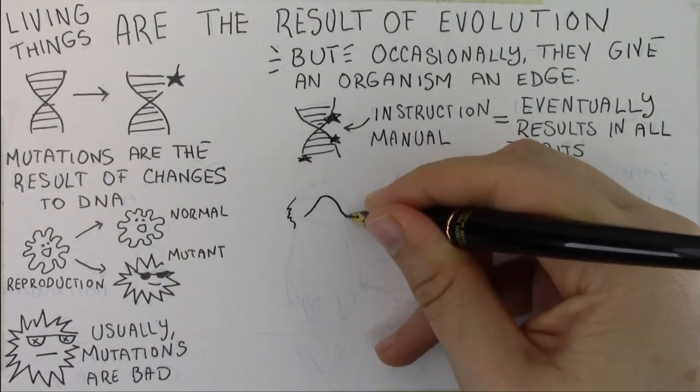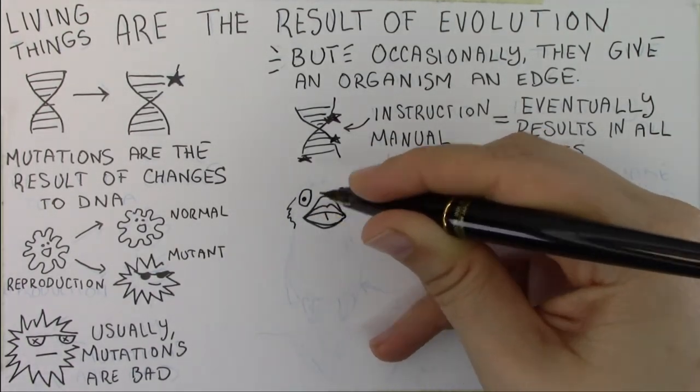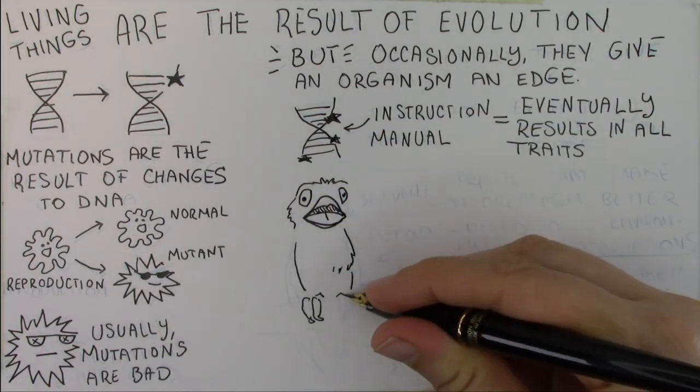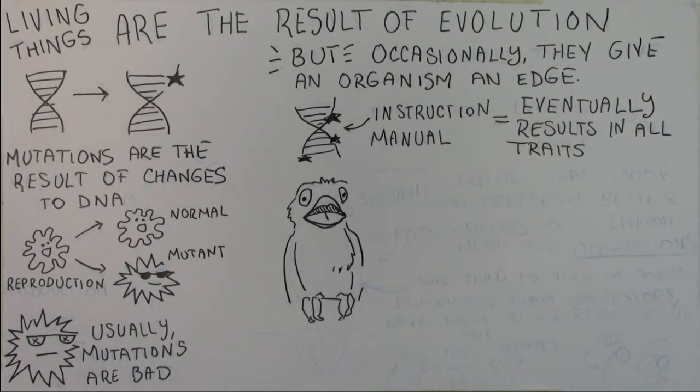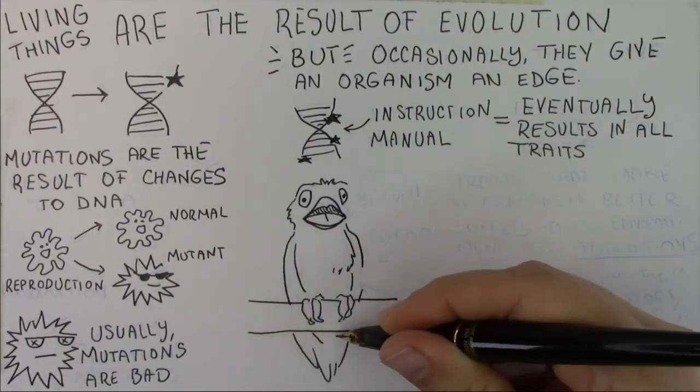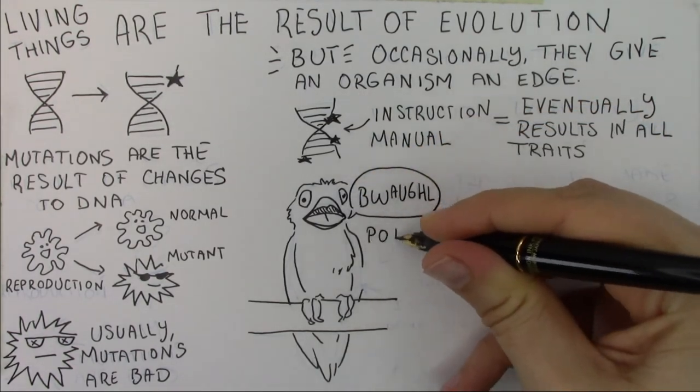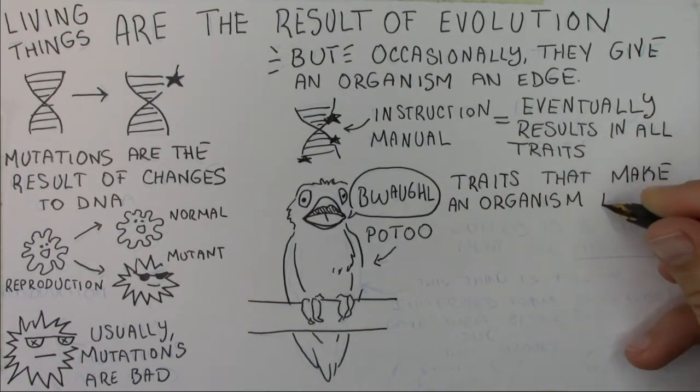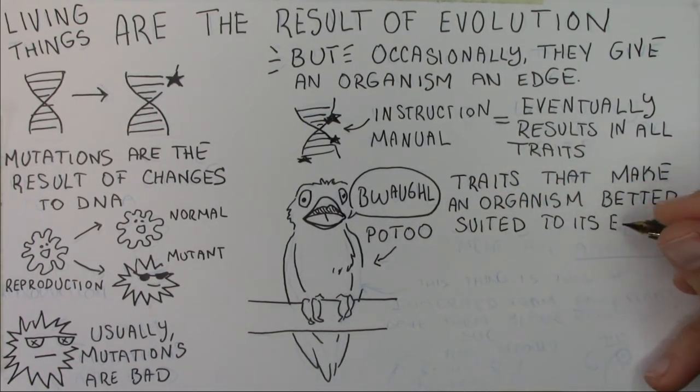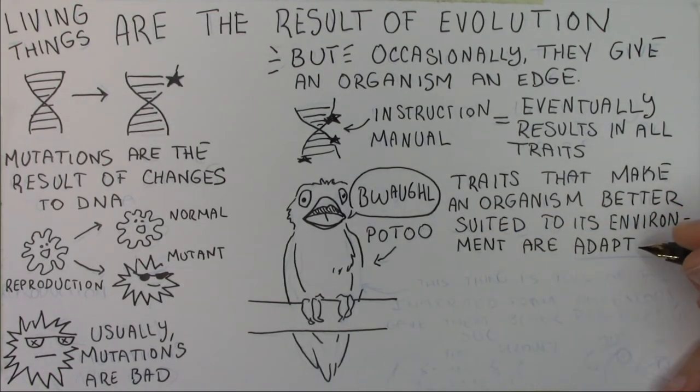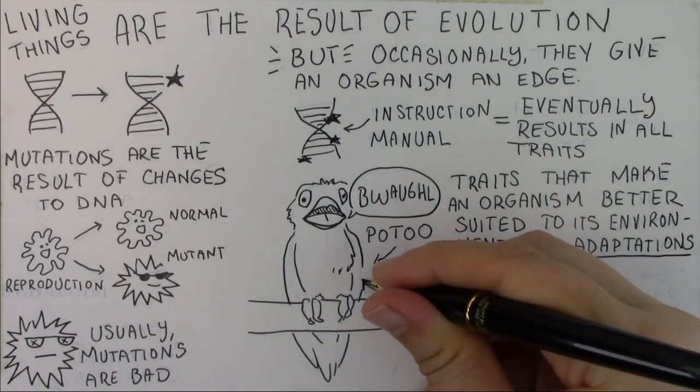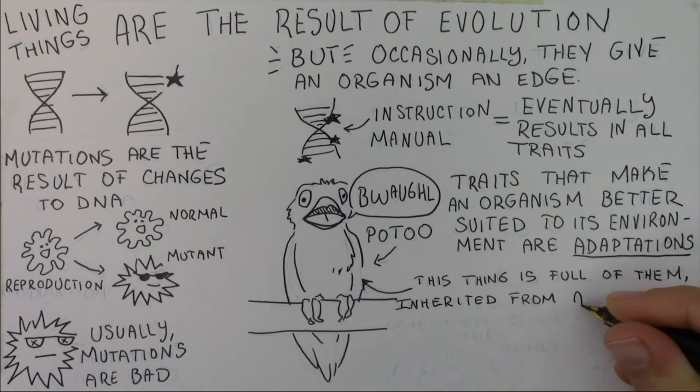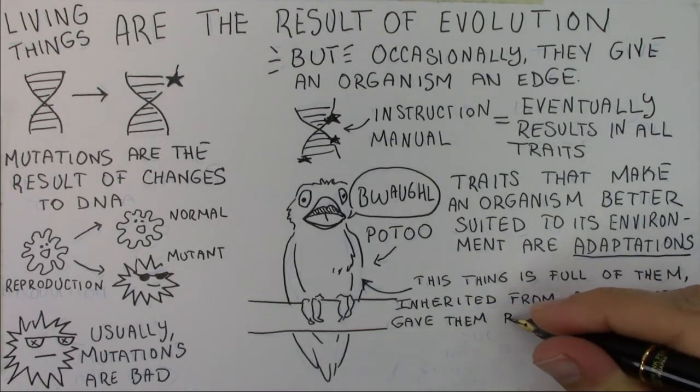So when you consider an organism like the one I'm drawing here, it's got these bizarre giant eyes, it's got this ridiculously huge mouth, it is essentially one of the weirdest birds I've ever seen. This thing is known as a potoo. I'm not really quite sure on the pronunciation, but it's bizarre. They were popular on the internet a few years ago. Go ahead and look them up. And you might be looking at an organism like this and wondering, how does this come to be? And all of those bizarre traits, the giant mouth, the giant eyes, those are all features which are making it more suited to its environment. We know them as adaptations.